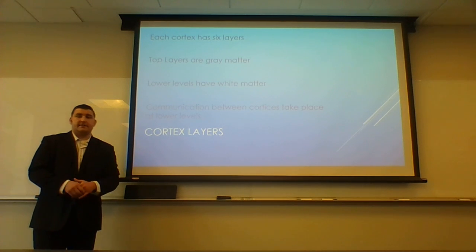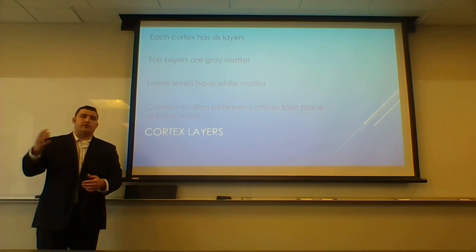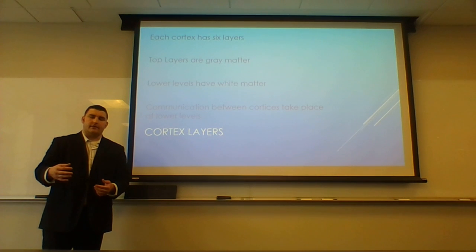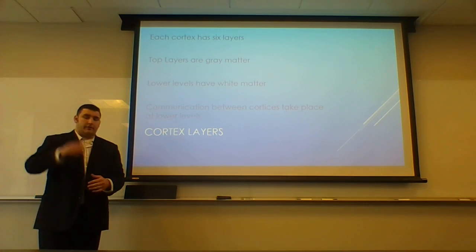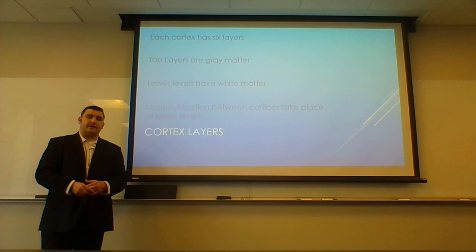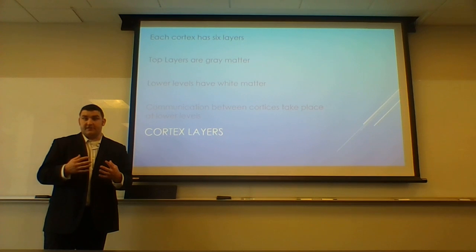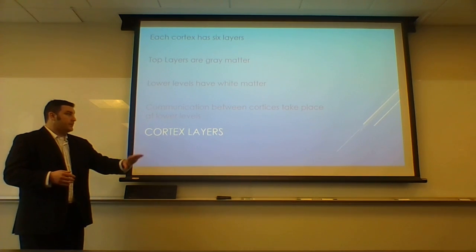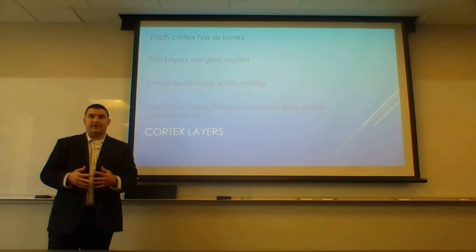The cortex has six different layers. We've heard gray matter and white matter talked about. The outer upper layers of the cortex contain the gray matter, where the cortex communicates with itself. As you dig deeper into the cortex, you find more white matter, and this is where the cortices communicate with one another.